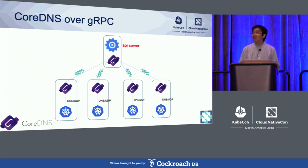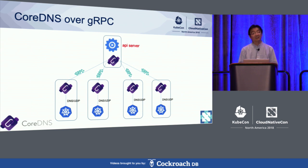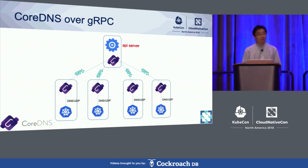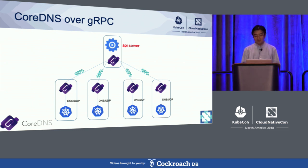This is a diagram that shows the configuration in our production. At each node, we have one CoreDNS server. The cluster DNS configuration will always point to the CoreDNS server on the same host. We use gRPC for cross-host communications. The CoreDNS server could talk to the Kubernetes API server directly, but for scalability and performance reasons, we decided to add an intermediate caching server in between.